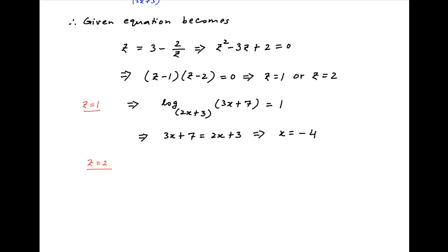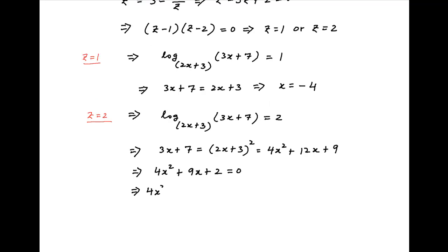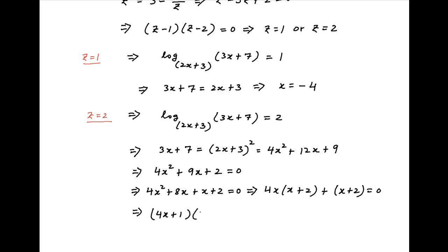In the second case when z equals 2, log of (3x plus 7) to the base (2x plus 3) equals 2, which implies that 3x plus 7 equals (2x plus 3) squared, which gives 4x squared plus 8x plus x plus 2 equals 0, so 4x(x plus 2) plus 1(x plus 2) equals 0, which implies (4x plus 1)(x plus 2) equals 0. Therefore x equals minus 2 or minus 1 upon 4 in this case.